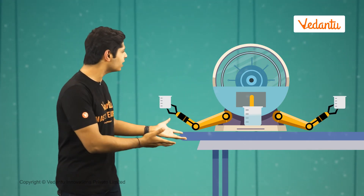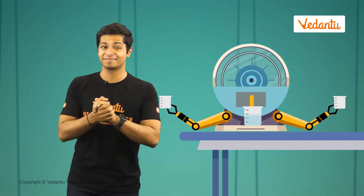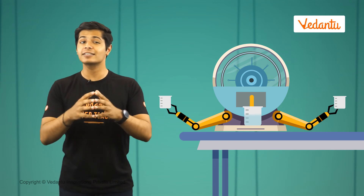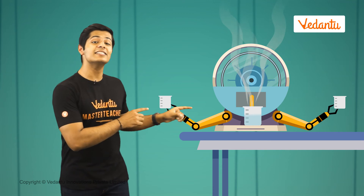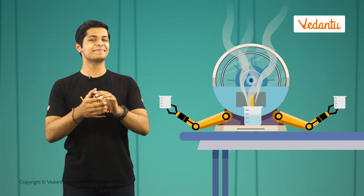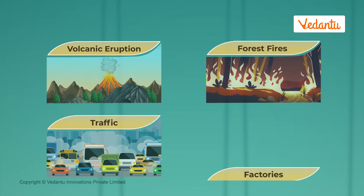Why is dust and smoke coming out from the machine? Let me fix it. Okay, fixed it. But this reminds me of some other components of air as well — there are dust particles and smoke. You might have noticed dust particles floating in the beam of light, and also while playing in the park. The smoke in air comes from natural activities such as volcanic eruptions and forest fires, and human activities like smoke from vehicles and factories.